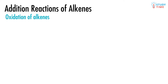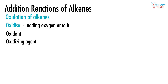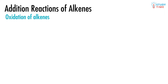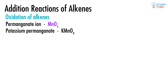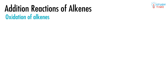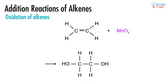Oxidation of alkenes is interesting and nearly impossible to predict without seeing it first. When we oxidize something, we're adding oxygen onto it. Oxidation reactions require an oxidizing agent — for this reaction we use the bright purple permanganate ion, MnO₄⁻. We also use water. You may sometimes see this as potassium permanganate, KMnO₄.